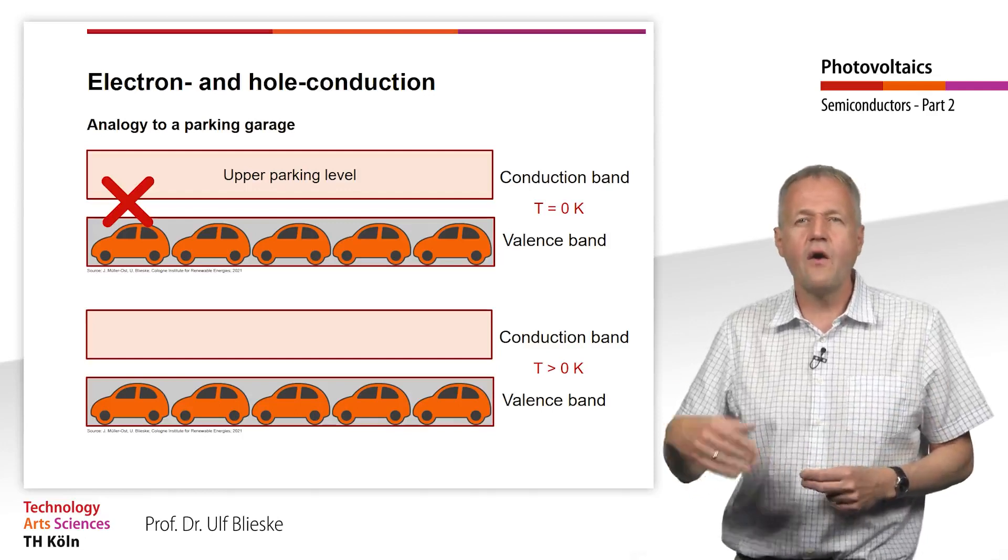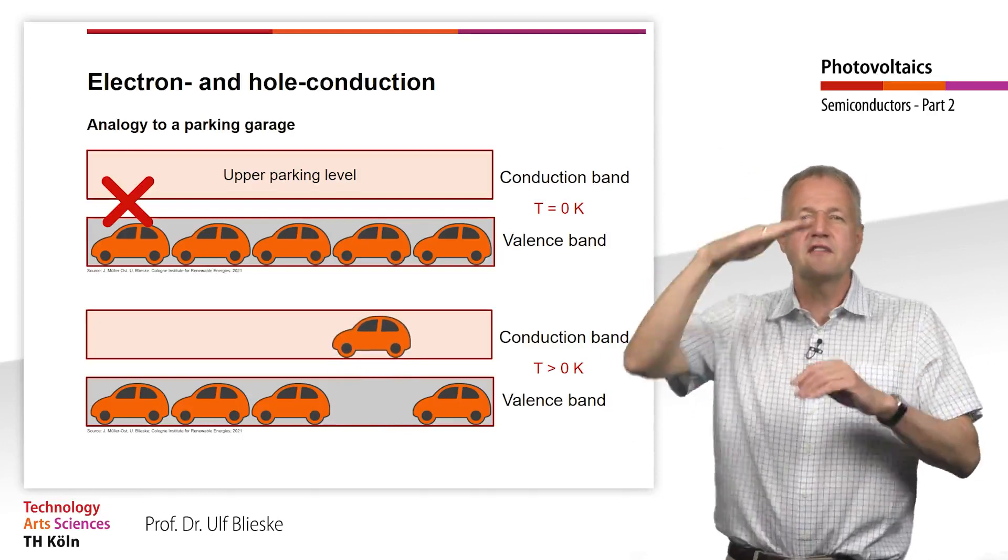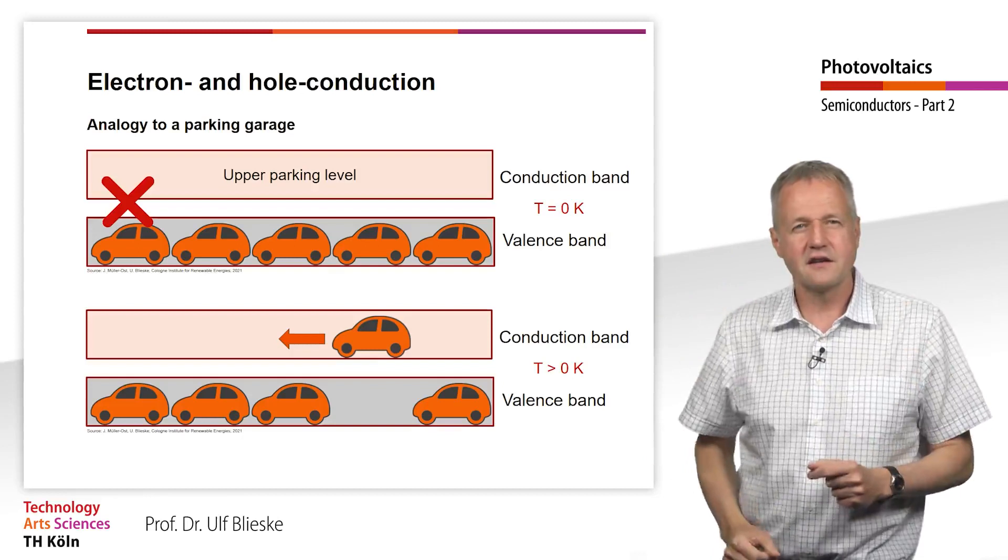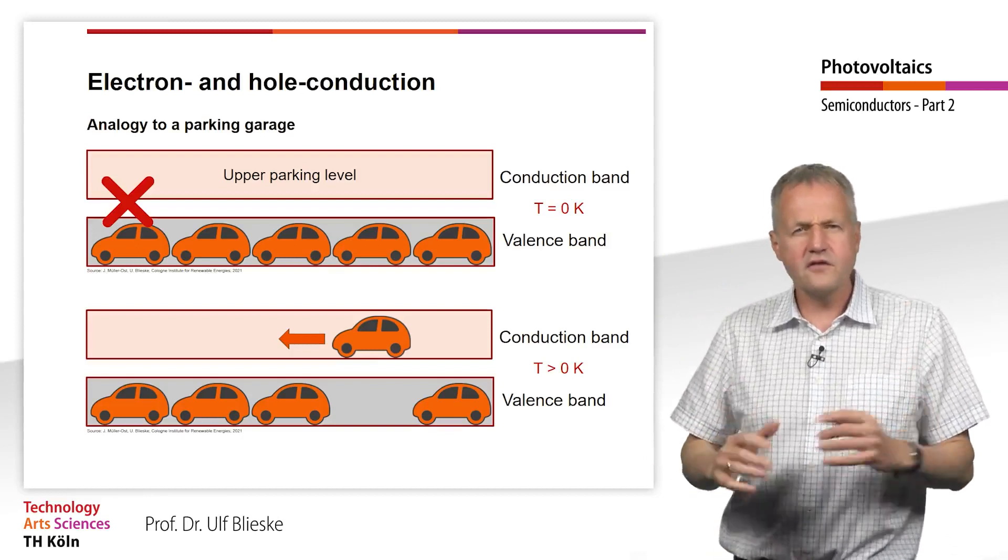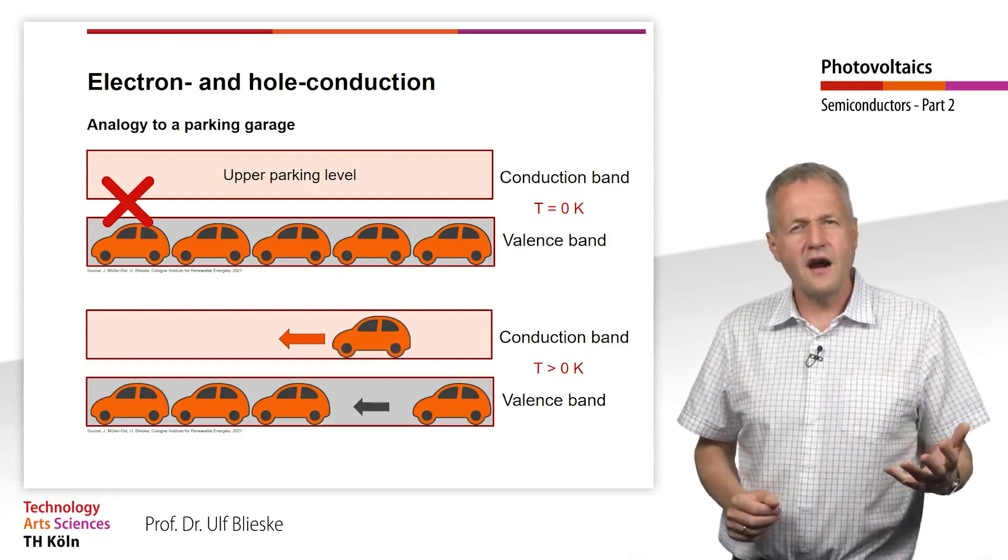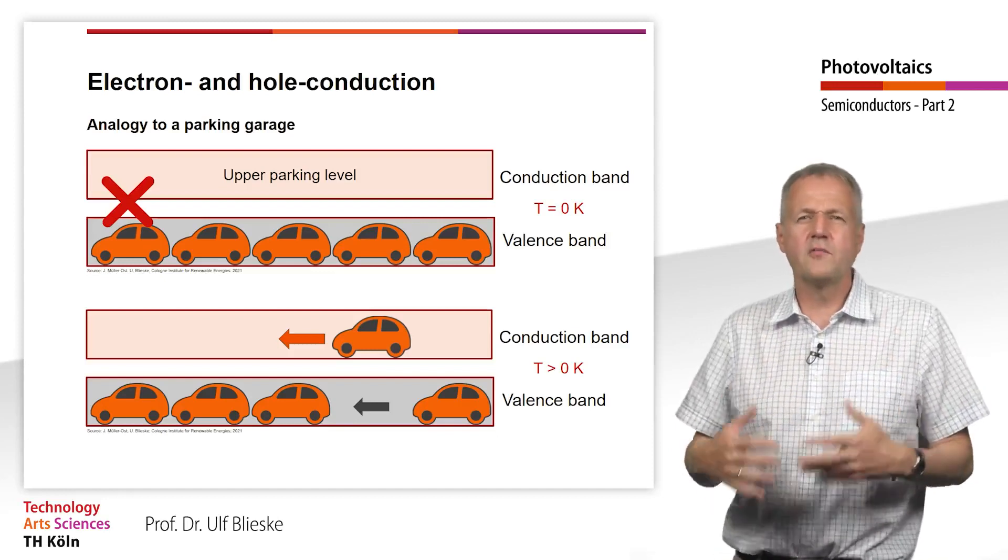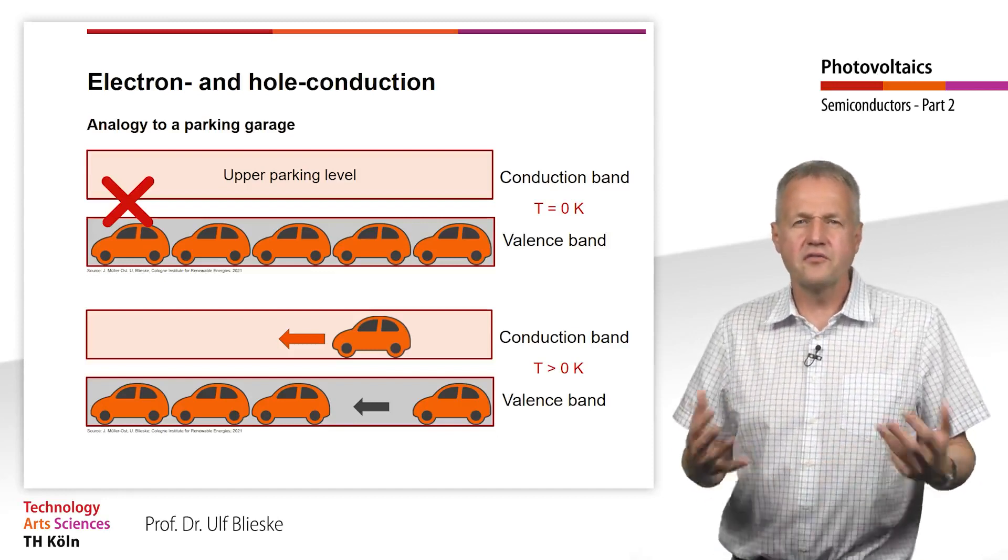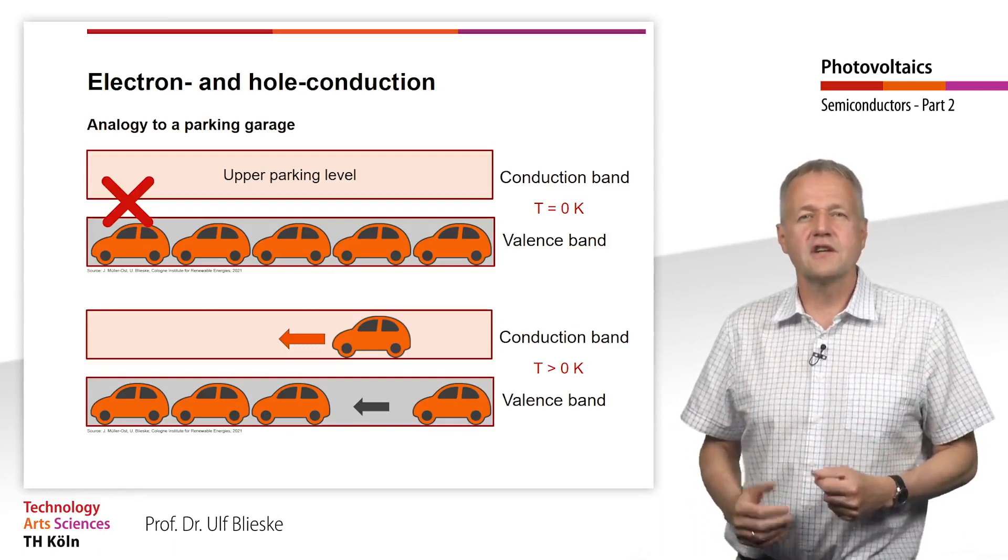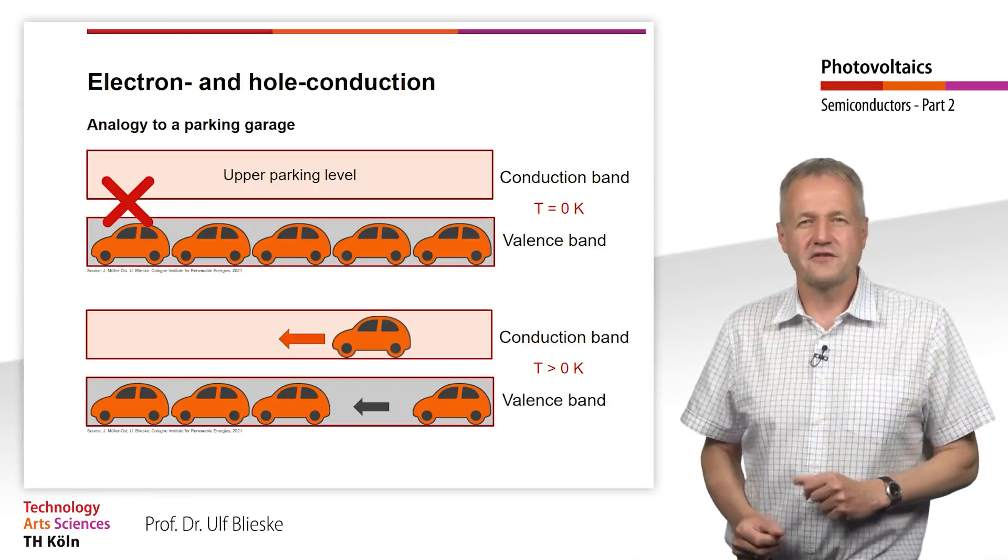Individual cars can now enter the upper parking deck. These cars can then play James Bond and move freely around the upper parking deck. But also on the lower parking deck, cars can start to move. The cars can move from gap to gap. Of course, this is more time consuming. For this reason, the mobility of holes in a semiconductor is about a factor of 10 lower than the mobility of electrons.